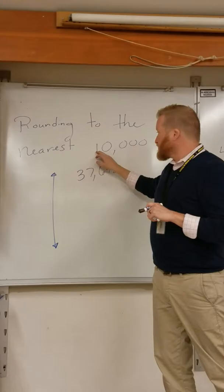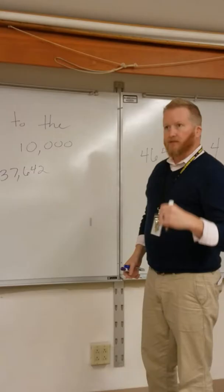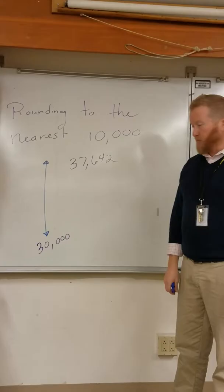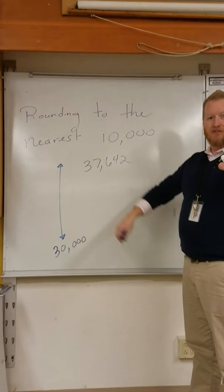The first thing I like to emphasize, if we're rounding to the nearest 10,000, that means we're counting by 10,000. Zero, 10,000, 20,000, 30,000. This is called a vertical number line. My next 10,000 from 30,000 would be called 40,000.